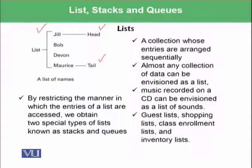Almost any collection of data can be envisioned as a list. For example, music recorded on a CD can be envisioned as a list of sounds. You could have a guest list, a shopping list with products you are going to buy, a class enrollment list, an attendance sheet, or an inventory list of products available in stock.